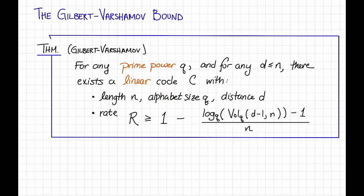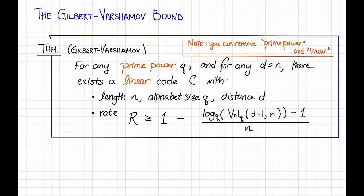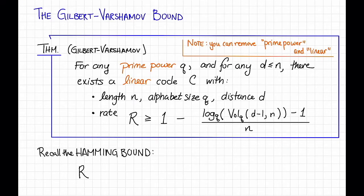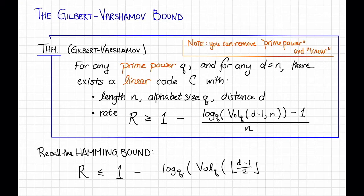This is the version of the theorem we will prove, with prime power and linear, but in fact the statement is also true without those assumptions. Let's compare this to the Hamming bound we saw before. The Hamming bound says that for any code C with length n, distance d, and alphabet size q, the rate r is at most 1 minus the log base q of the q-ary volume of the Hamming ball of radius floor of (d minus 1) over 2, in n-dimensional space, all divided by n.